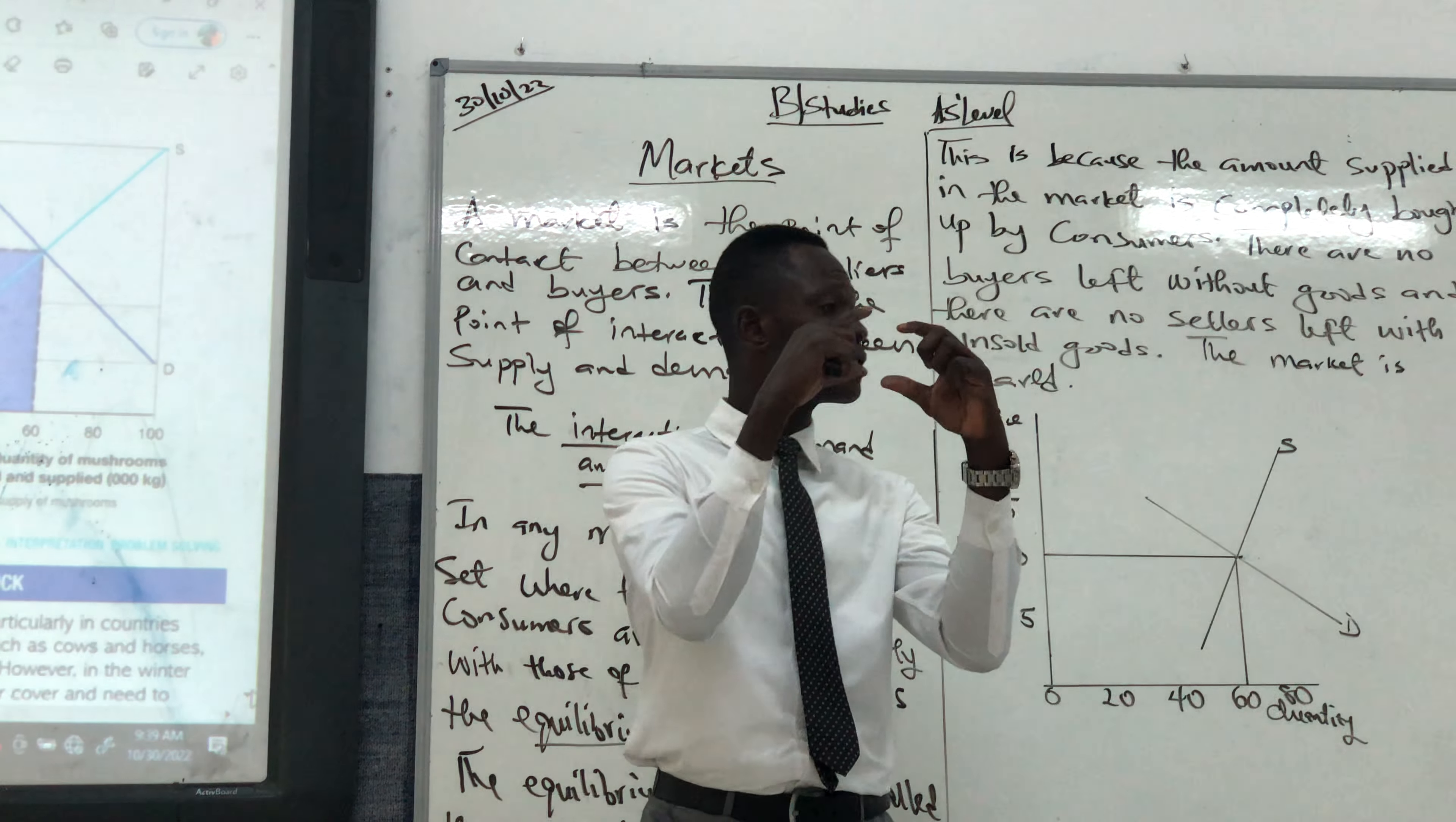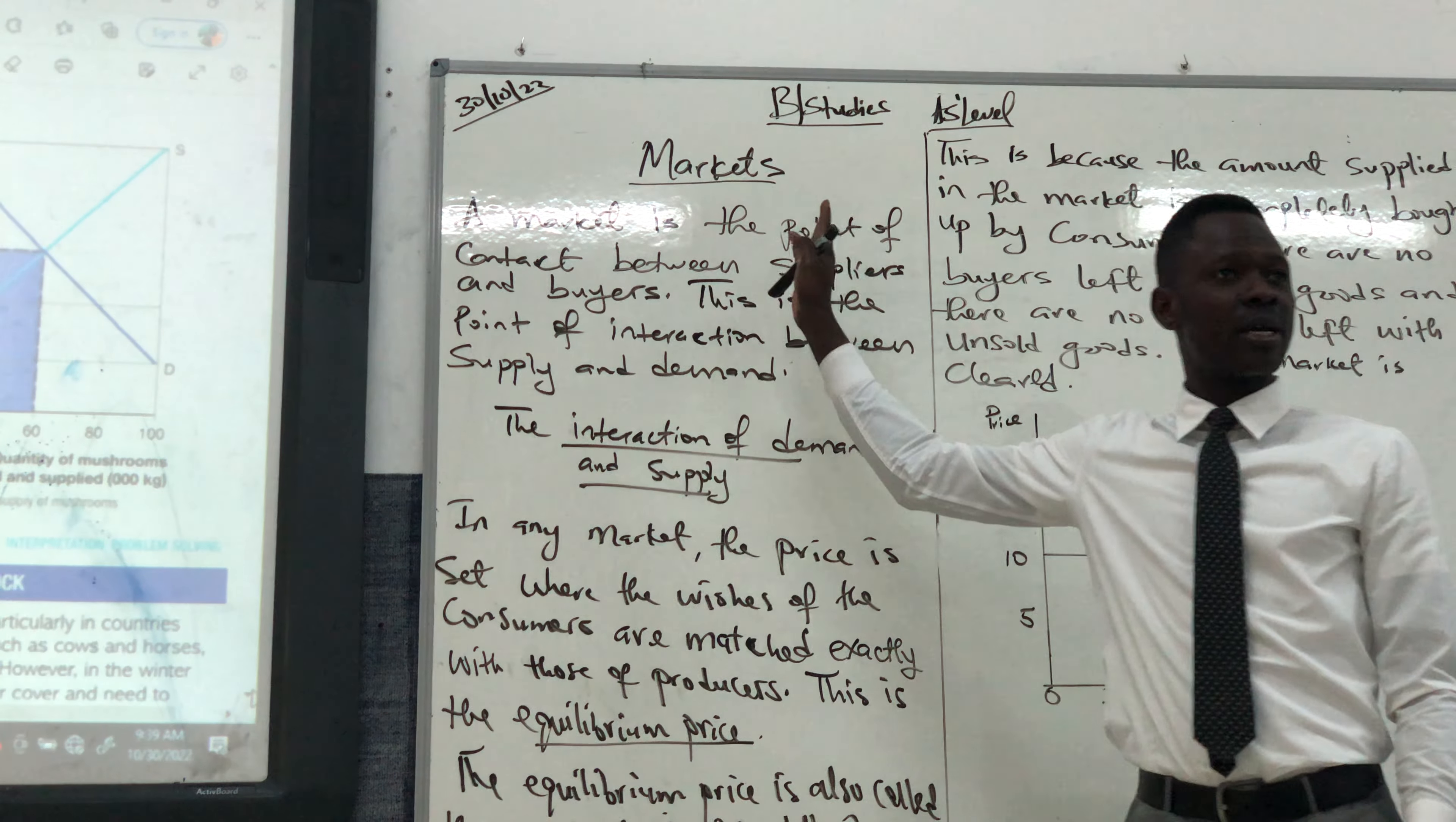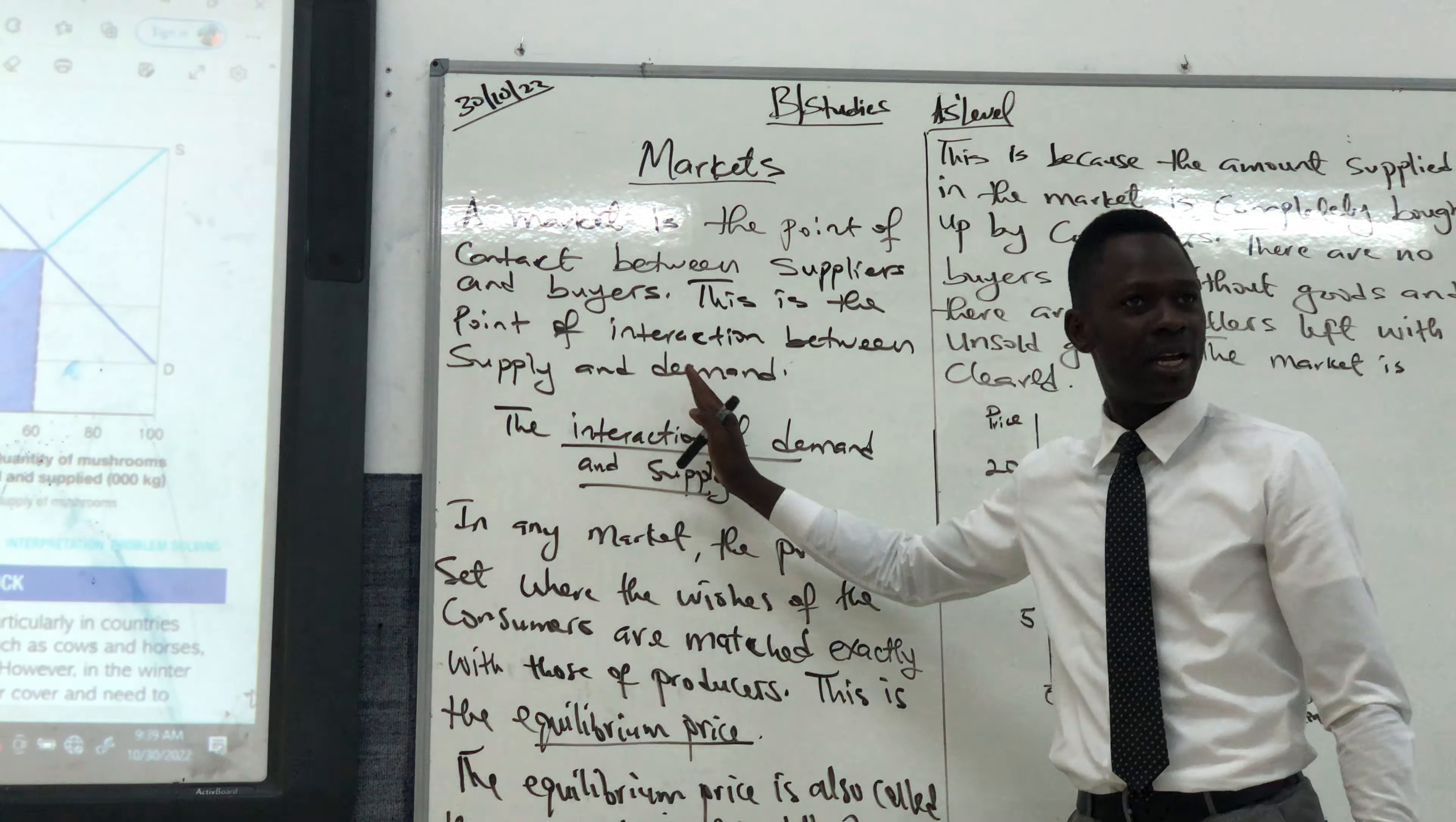The interaction between demand and supply brings us to this topic today, which is market. The market is the point of contact between suppliers and buyers. This is the point of interaction between suppliers and demand.